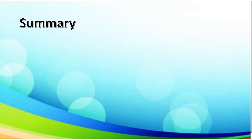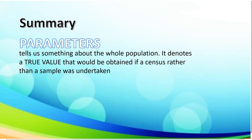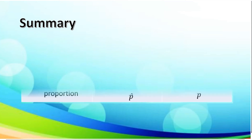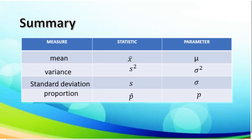Now, let's take the summary of our lesson for today. Parameters tell us something about the whole population — they denote a true value that would be obtained if a census rather than a sample was undertaken. Statistics is a known number and a variable that depends on the portion of the population, or simply the sample. We also use a table to easily determine the parameter and statistic symbols for mean, variance, standard deviation, and proportion.